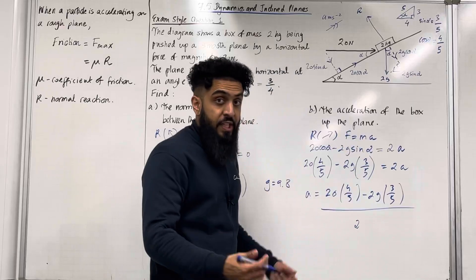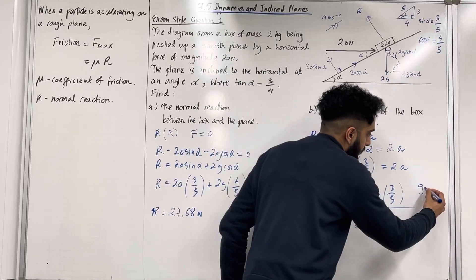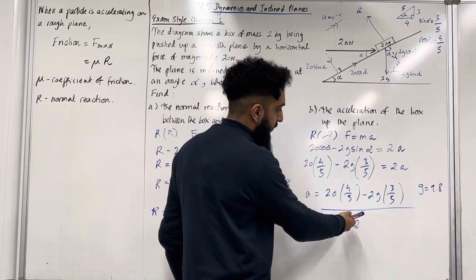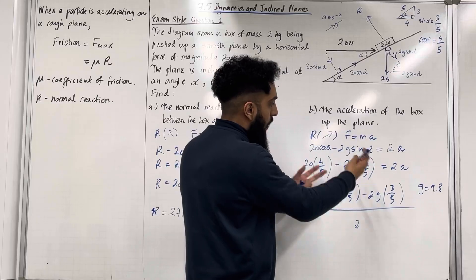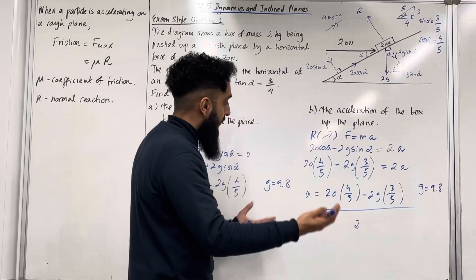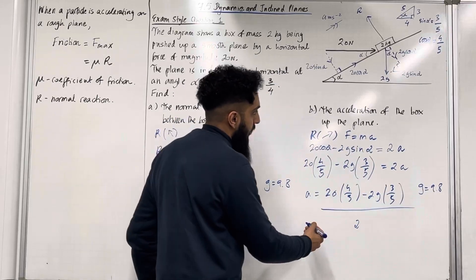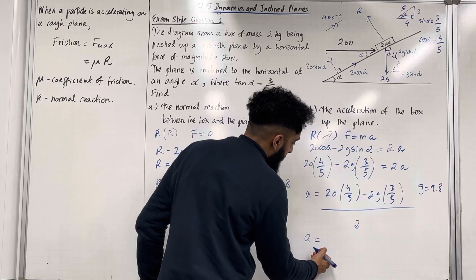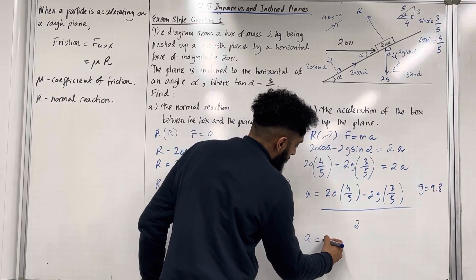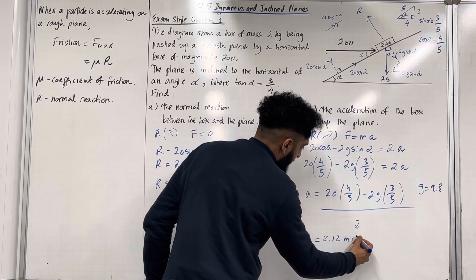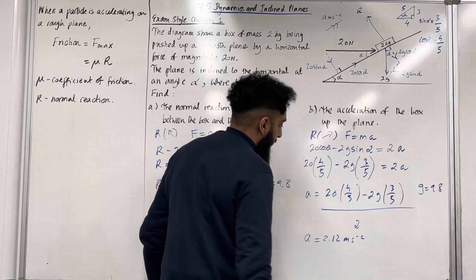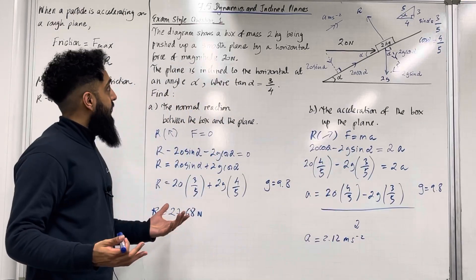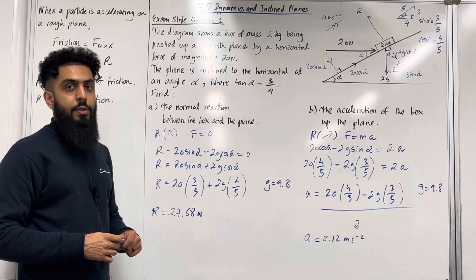We know that g equals 9.8, so substituting into the expression and putting it into my calculator gives the acceleration of the box up the plane. The acceleration is equal to 2.12 metres per second squared to 4 significant figures. That completes exam style question 1.